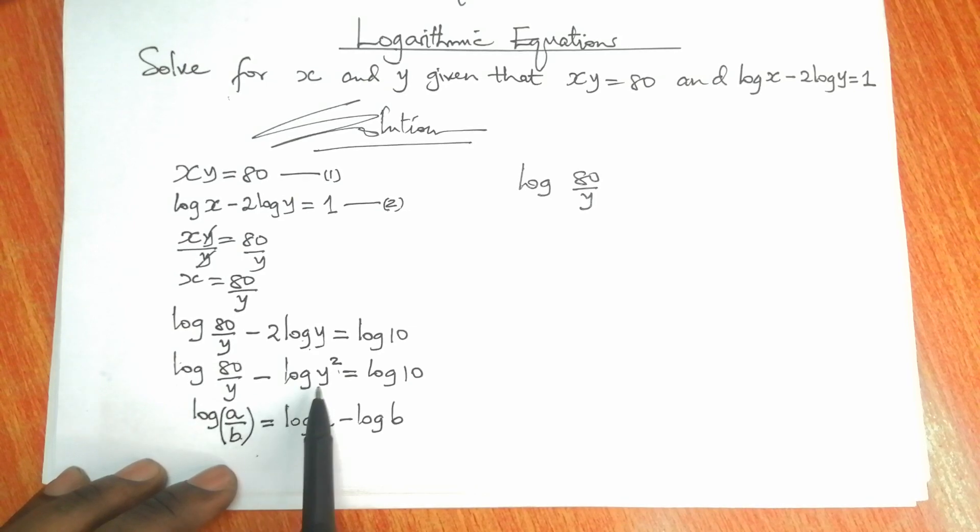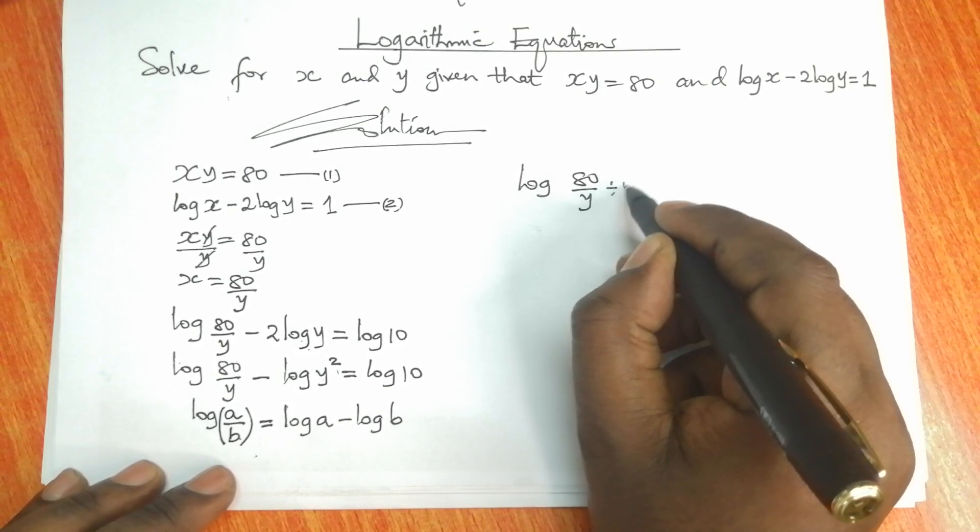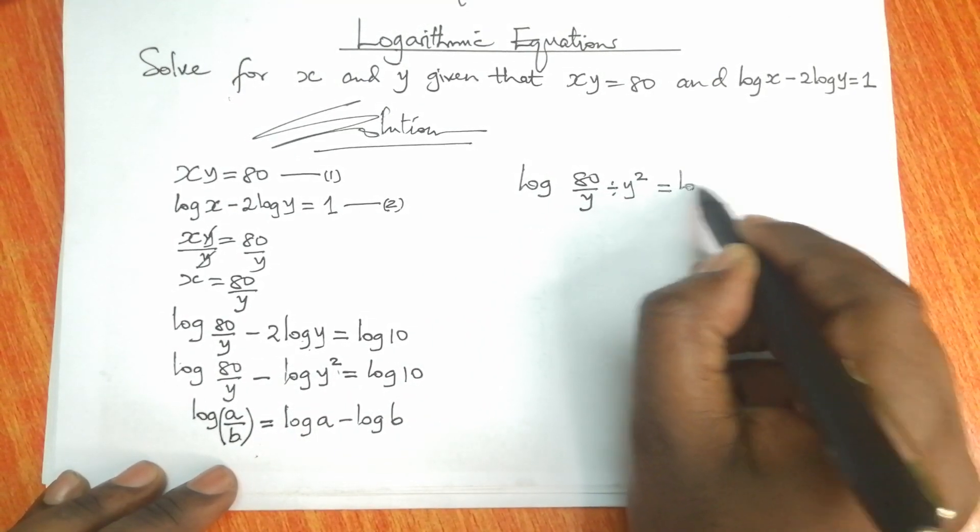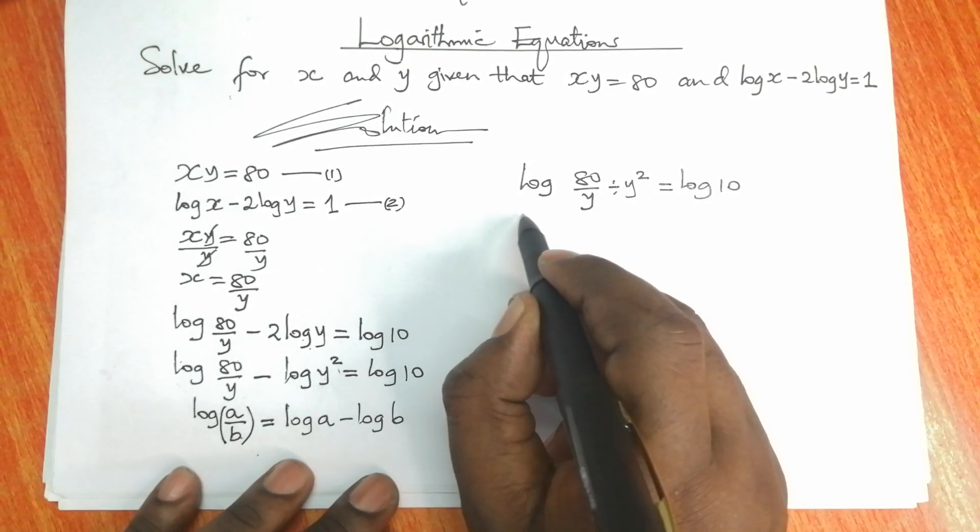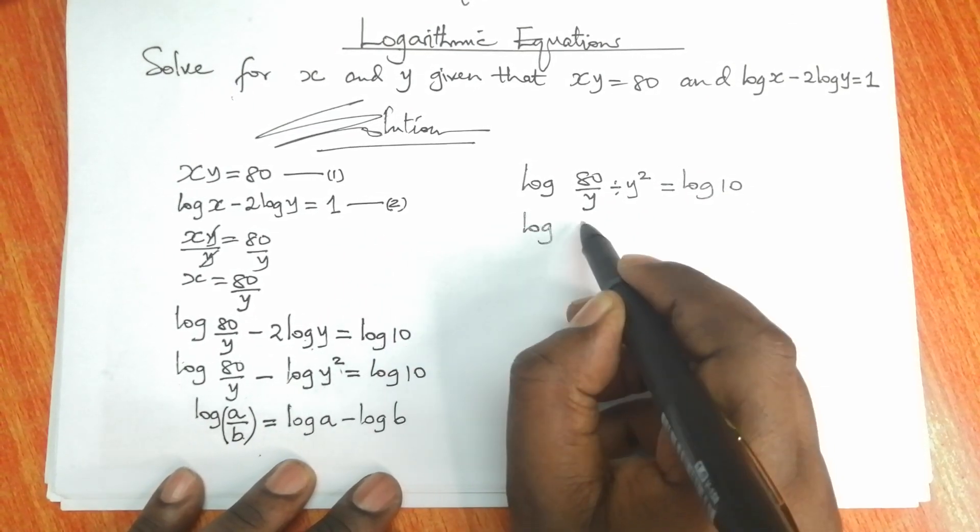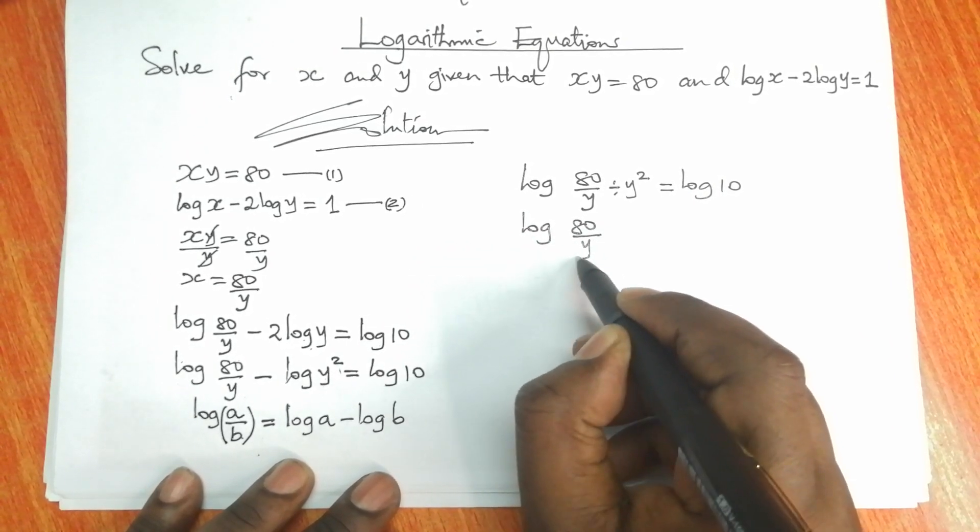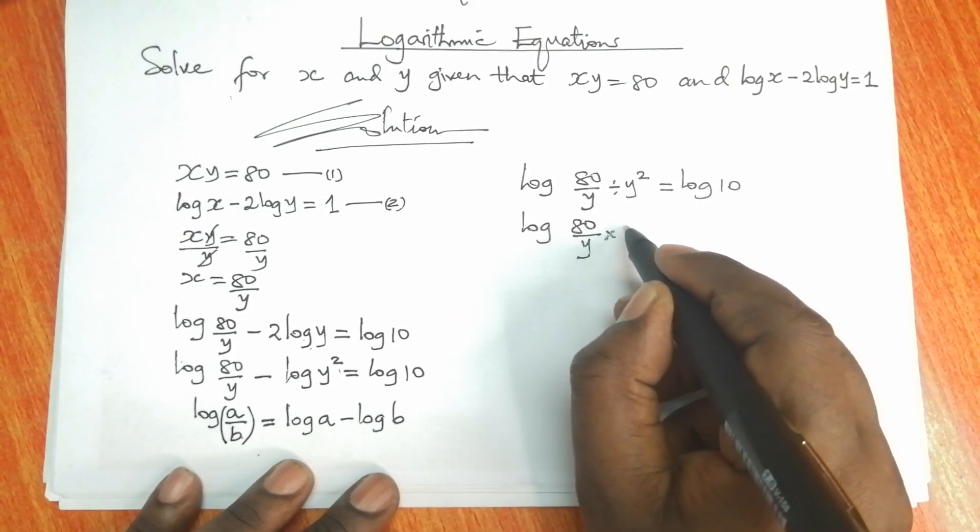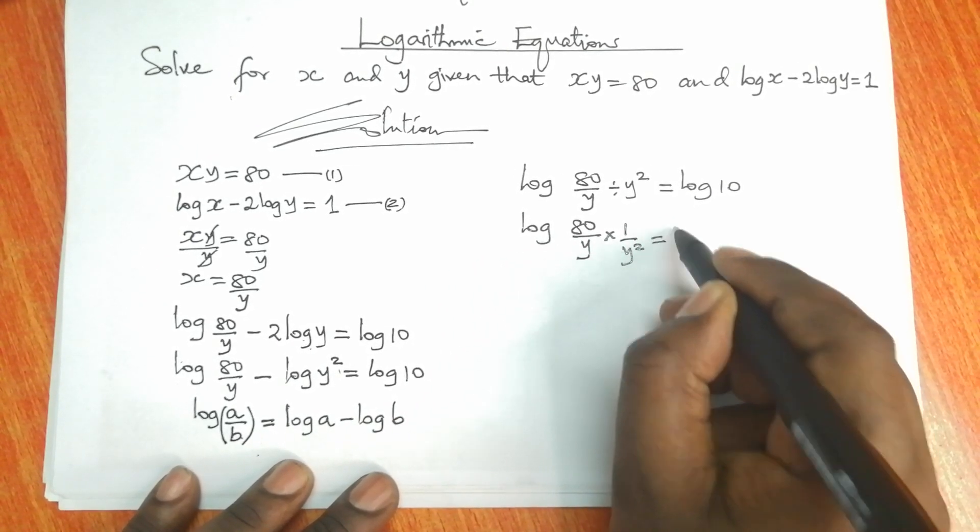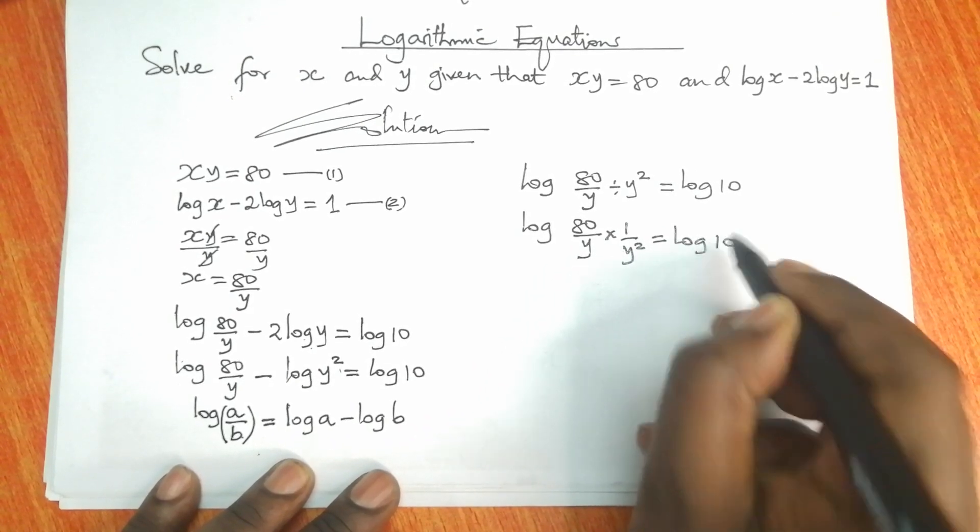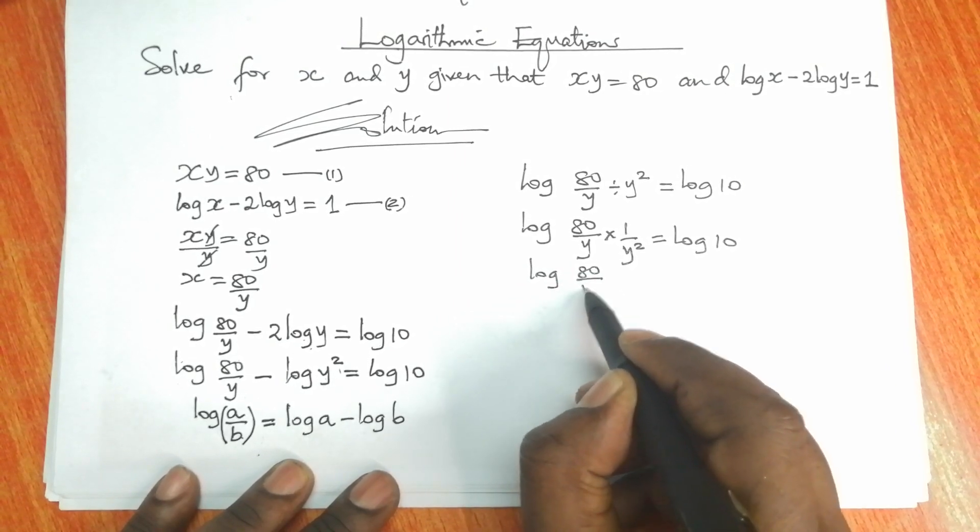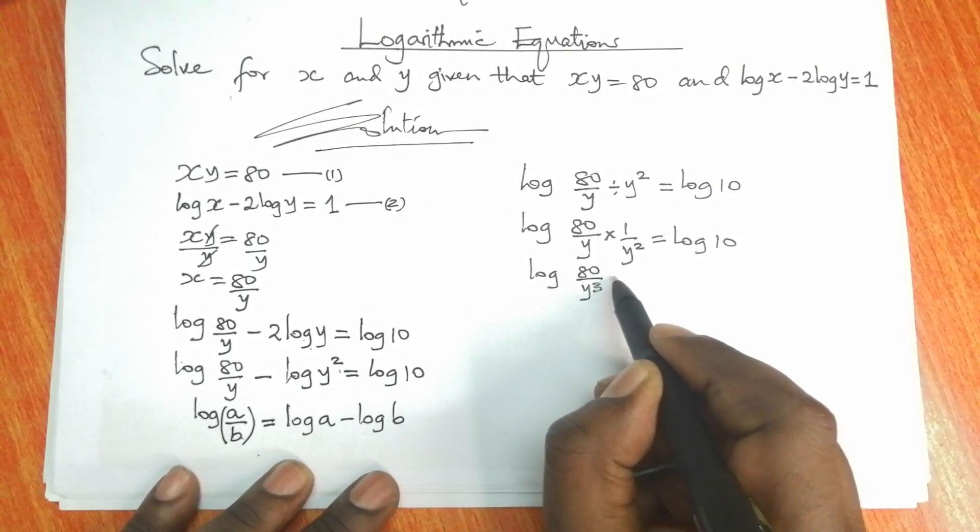Divided by y squared will be equal to the logarithm of 10. And therefore we're going to have log 80 over y divided by y squared, which is the same as multiplying by the reciprocal of y squared, would be equal to log 10. And therefore log 80 over y times y squared is y cubed, would be equal to log 10.